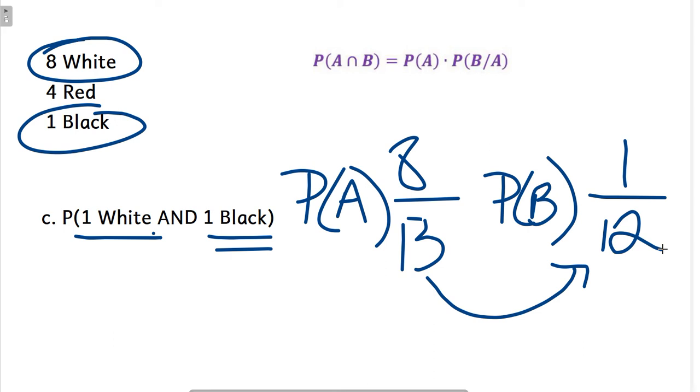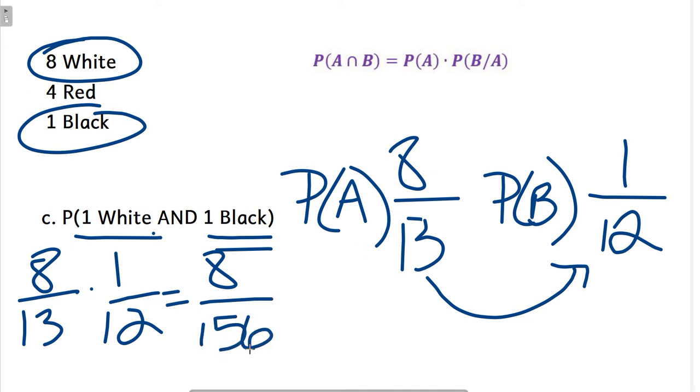I can't simplify any of those, so I'm going to multiply. Eight thirteenths times one twelfth. Multiply straight across, we get eight and then twelve times thirteen is a hundred and fifty-six. I could actually divide that by four. Eight divided by four is two, and a hundred and fifty-six divided by four is thirty-nine. So two thirty-ninths is that last one.